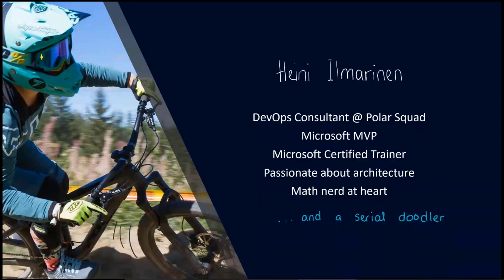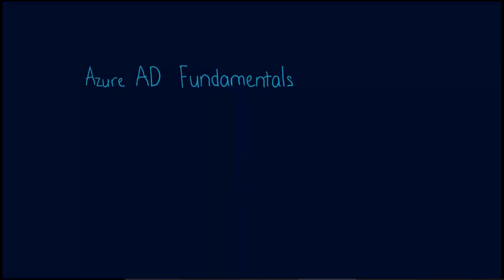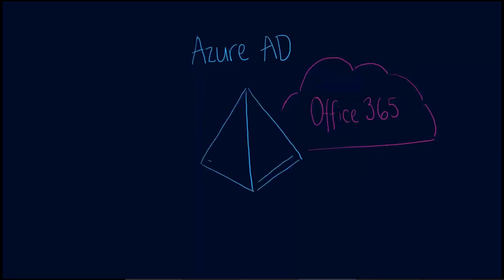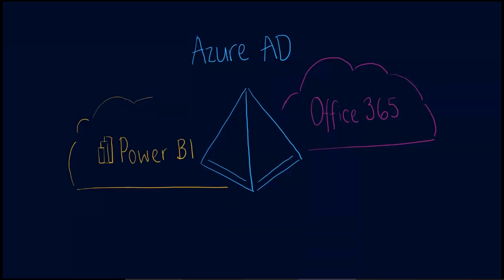Let's get started with Azure AD fundamentals. How most companies end up with Azure AD is by starting to use Office 365 — something like Teams or OneDrive. You kind of get Azure AD on the side; you don't necessarily have to manage it a lot, but it comes as part of the package. Azure AD is where all those users using your Office 365 products have their identities held. Just as well, you could get started with Azure AD by starting to use Power BI, because to use Power BI you are required to have an Azure AD.